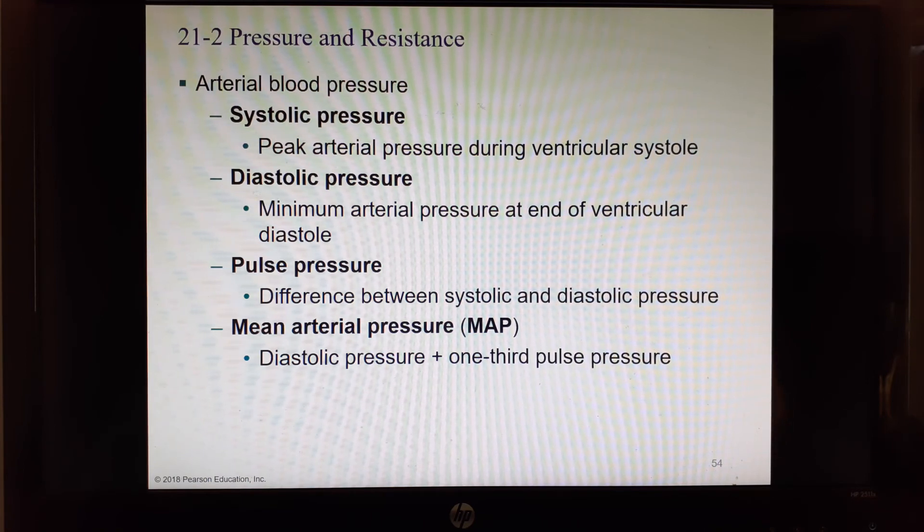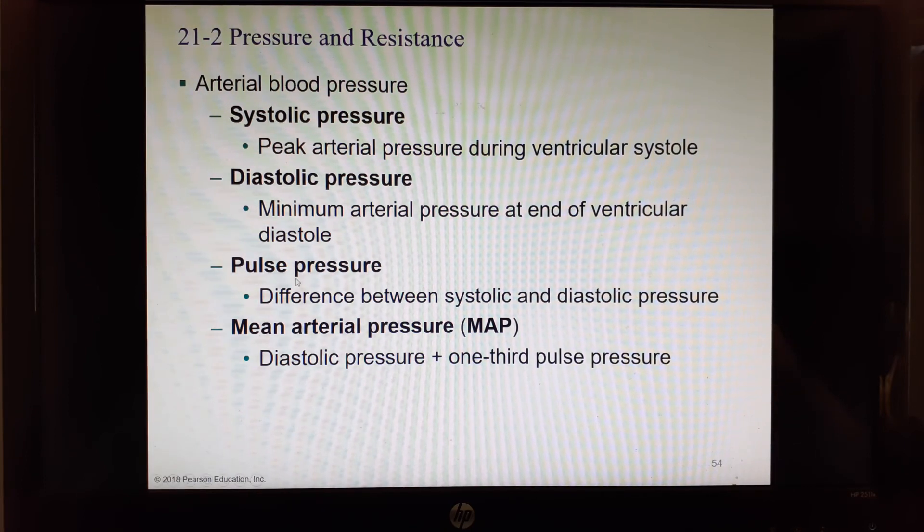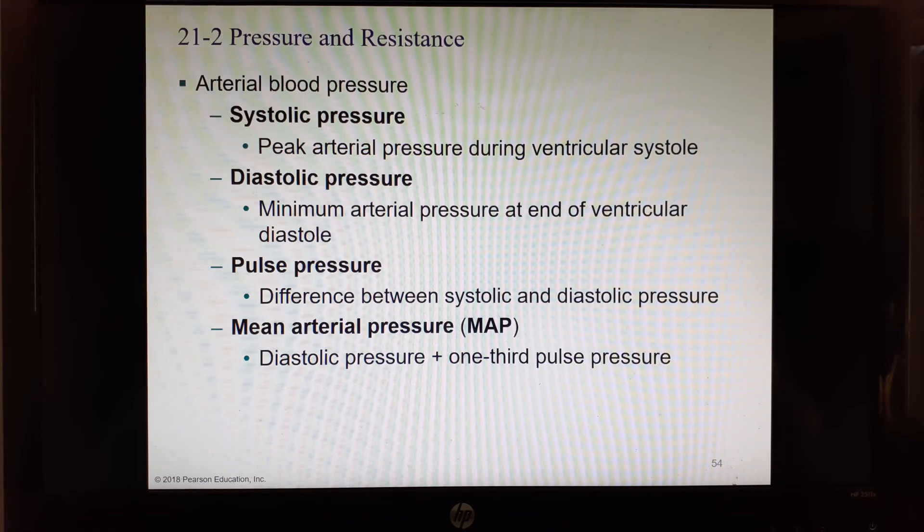It's like your maximum and minimum all within a few seconds of each other. Your pulse pressure is the difference between those two numbers. A normal healthy blood pressure is 120 over 80. The systolic pressure is 120 millimeters of mercury. The diastolic pressure is 80 millimeters of mercury. Your pulse pressure would be 40 millimeters of mercury.